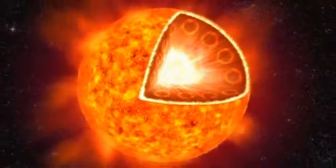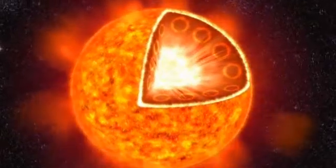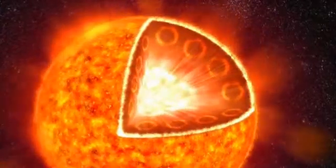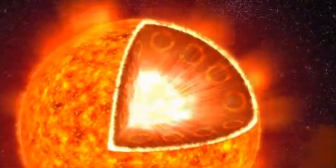In the outer layers, the heat moves to the surface in huge eddies called convection cells. These electrical currents of charged gas create magnetic fields inside the sun.